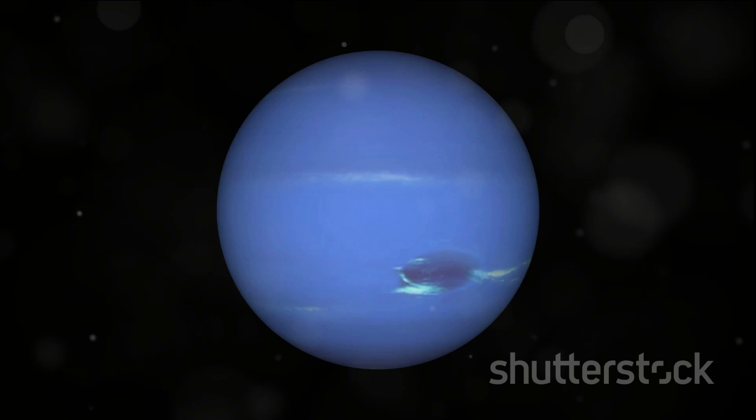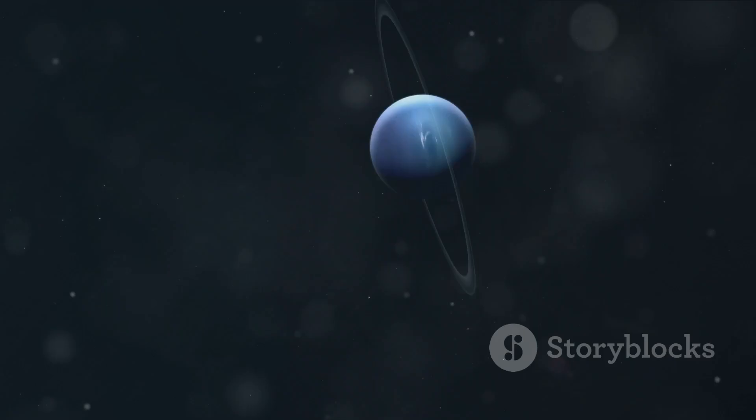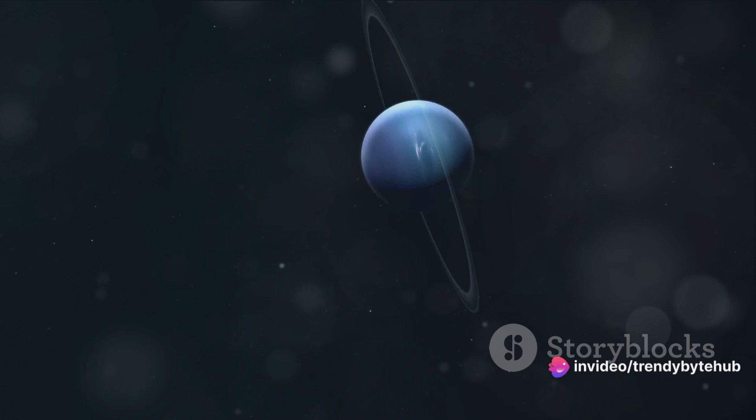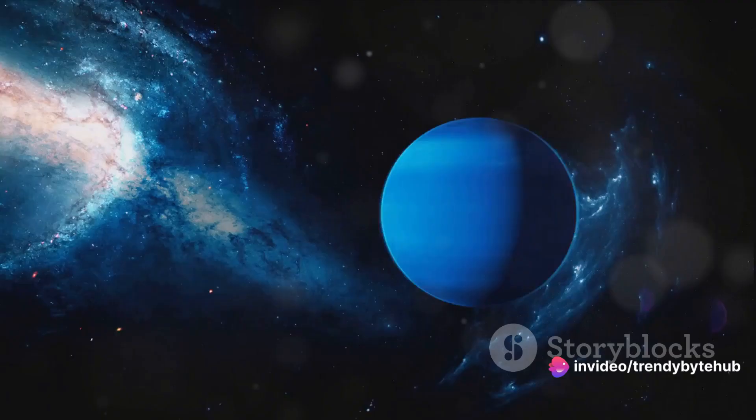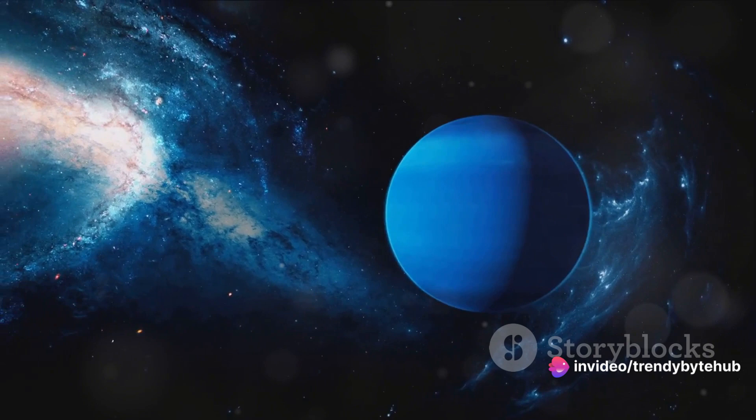Nestled in the outermost regions of our solar system, it is a celestial body that has captivated astronomers and space enthusiasts alike for centuries. Imagine a world so distant that it takes sunlight four hours to reach its surface. It's a place where a year is not measured in mere days or months, but in a staggering 165 Earth years. That's how long it takes Neptune to complete a single orbit around the Sun.